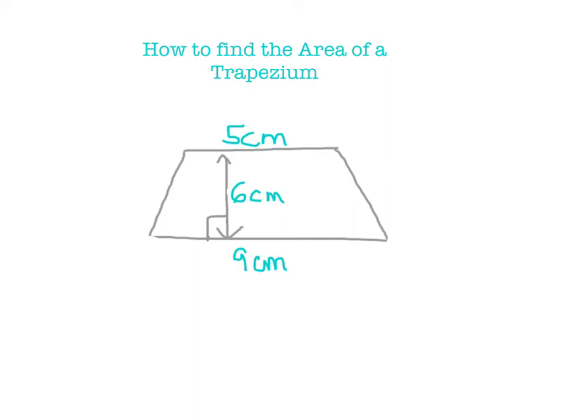How to find the area of a trapezium. First of all, you do 5 centimetres plus 9 centimetres. So you do 5 plus 9, which is 14.